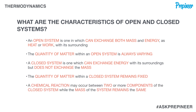This is an important point to note: a chemical reaction may occur between two or more components of the closed system while the mass of the system remains the same. Examples of a closed system include things like batteries, water in a tank, and a piston-cylinder assembly.